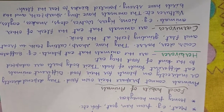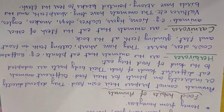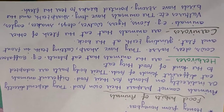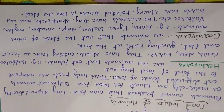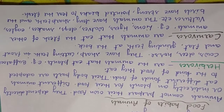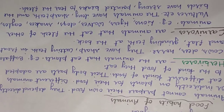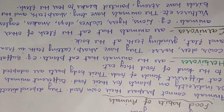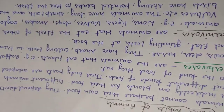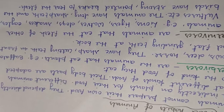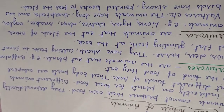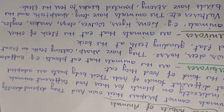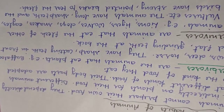Carnivores are animals that eat flesh. These animals have long sharp teeth, and the birds have strong pointed beaks to tear the flesh.